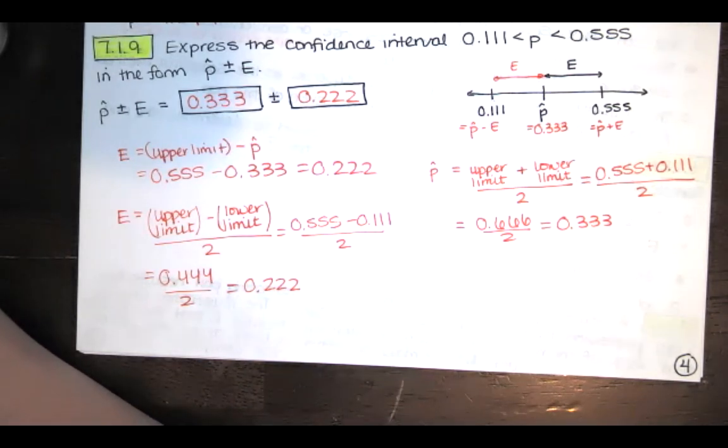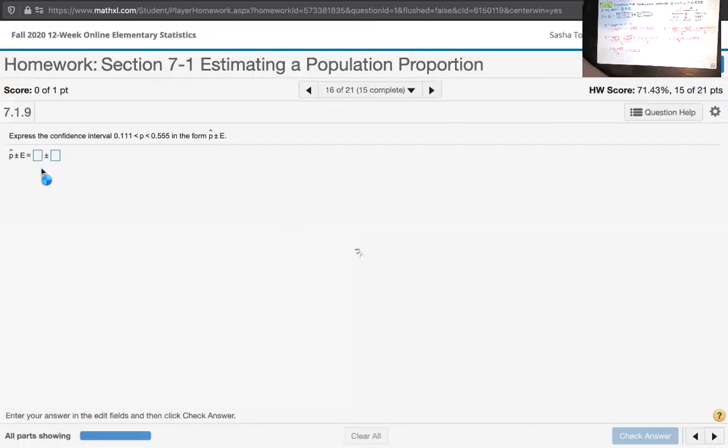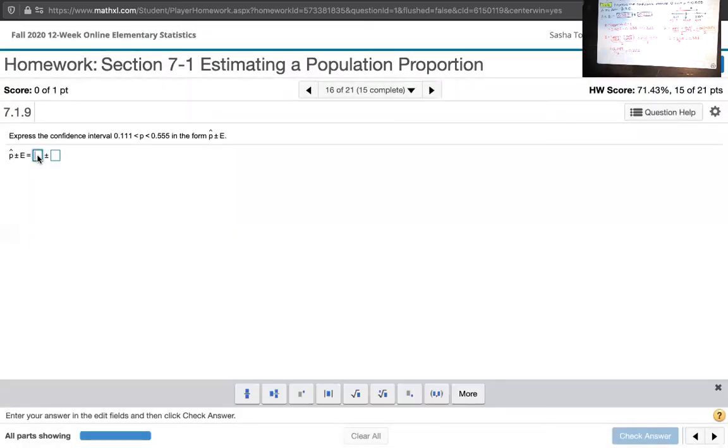Let's go back to the homework and show that MyLab Statistics likes it. This is pretty easy. And you can always check your work by adding those together, then you should get the upper limit: 0.333 plus 0.222 is 0.555, and then subtracting those: 0.333 minus 0.222 is 0.111.